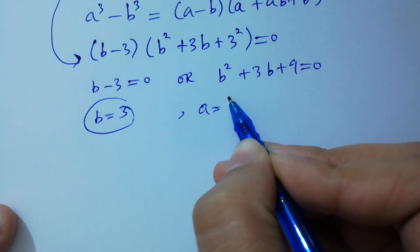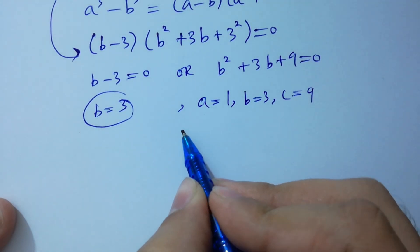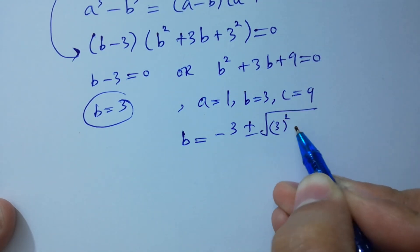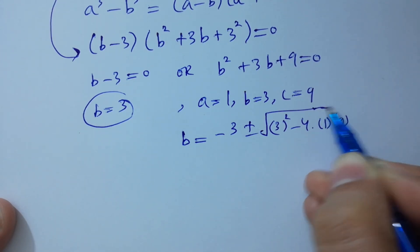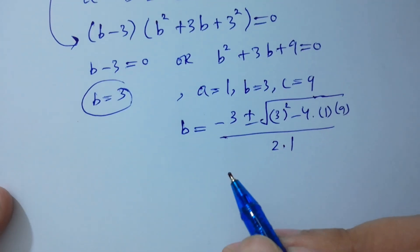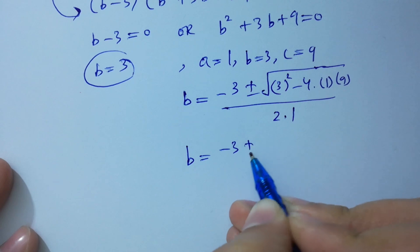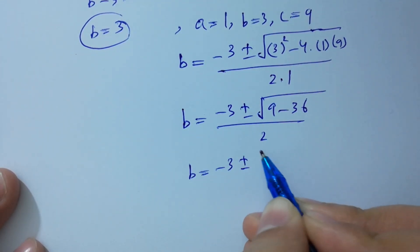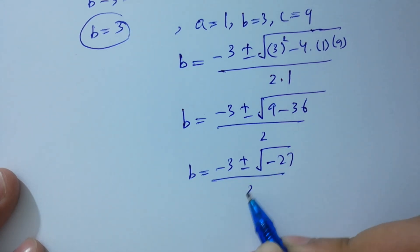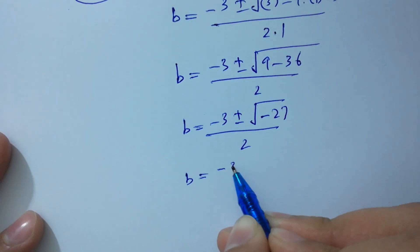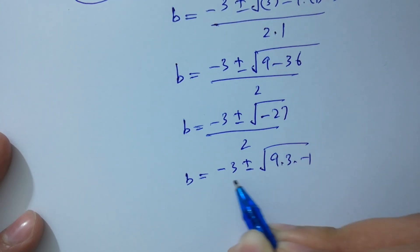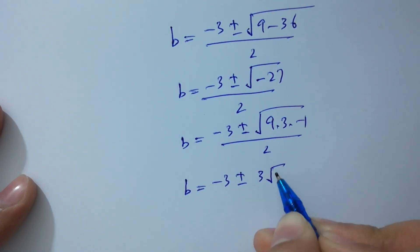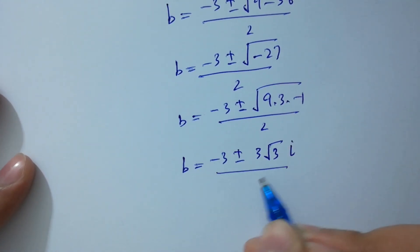Applying the quadratic formula with a equals 1, b equals 3, c equals 9: B equals minus 3 plus or minus square root of 3 squared minus 4 times 1 times 9, over 2. That gives B equals minus 3 plus or minus square root of 9 minus 36, over 2. So B equals minus 3 plus or minus square root of negative 27 over 2, which is minus 3 plus or minus 3 square root of 3 times i, over 2.